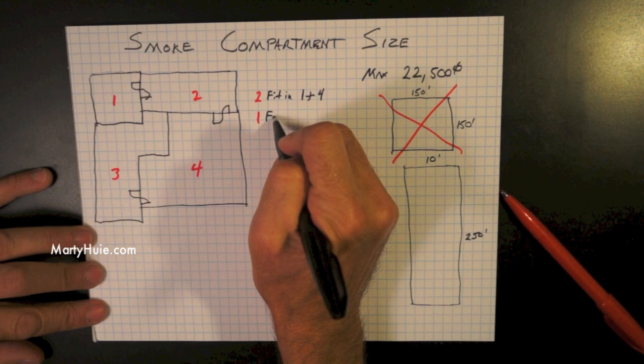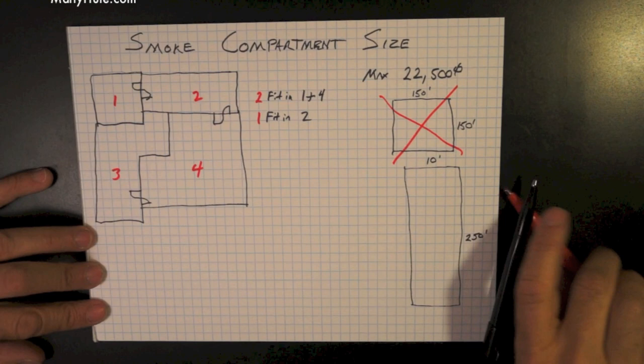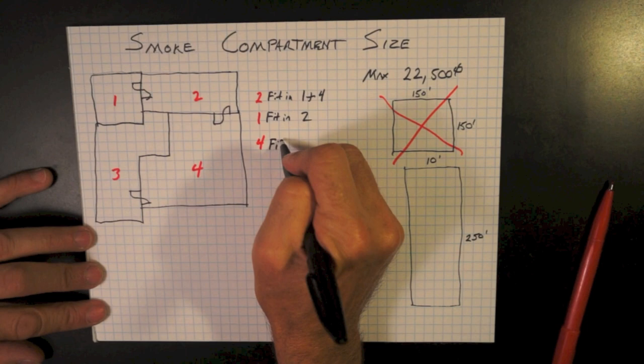And as we see, everyone in Smoke Compartment 1 must fit in Smoke Compartment 2. There's no communicating doors between 1 and 3 and no communicating doors between 2 and 3. Therefore, we do not need to concern ourselves with this calculation that we're getting ready to do.